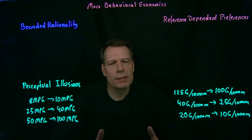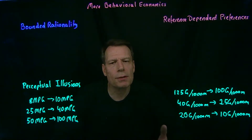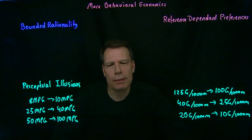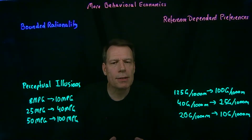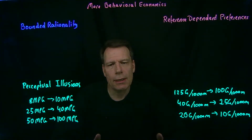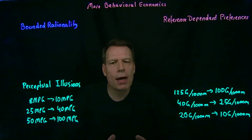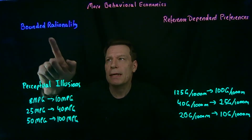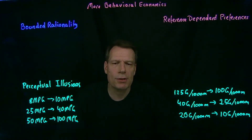We've seen how the idea of present bias entered economics through the field of psychology and became part of what we know as behavioral economics. But present bias isn't the only idea from psychology that's helped to shape behavioral economics. Now we'll mention a few other behavioral economics ideas, beginning with bounded rationality.